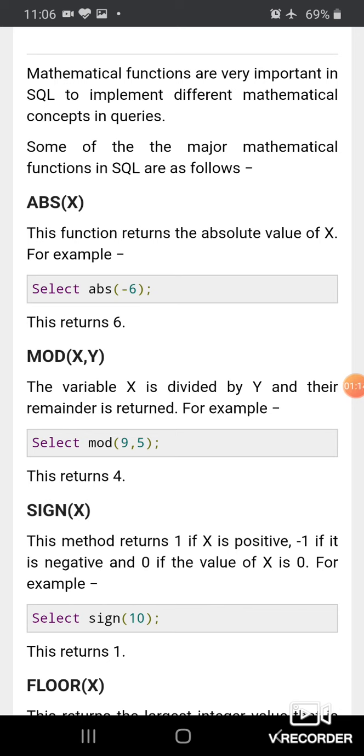For example, its syntax is SELECT ABS(). ABS stands for absolute value. In parenthesis, you have to write the integer, and after writing this it returns the absolute value of the integer that is written in the parenthesis.